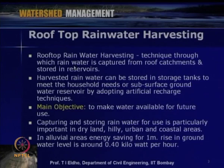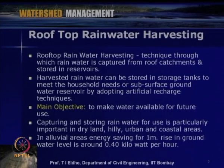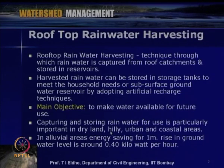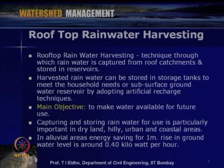The main objective of rooftop-based rainwater harvesting is to make water available for future use. Rainfall may be available only for a few months — in India about 3 to 4 months — and with special variation. We try to capture it through harvesting so it can be used in the dry season. This is particularly important in dry land, hilly regions where water drains quickly due to high slopes, and in urban and coastal regions where aquifers may be affected by seawater ingress.